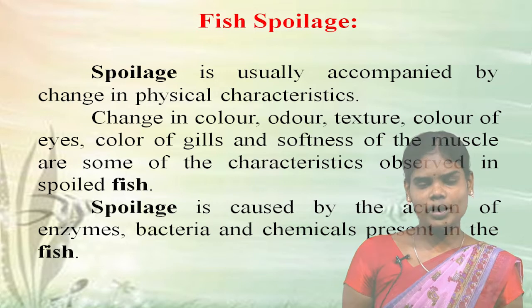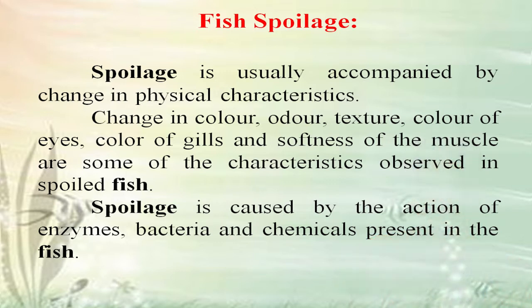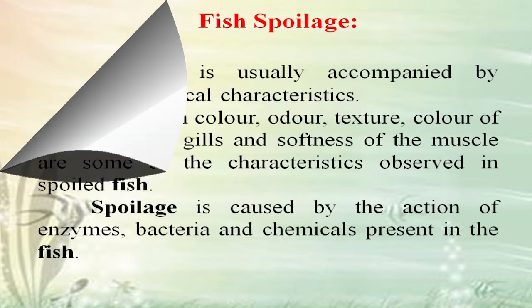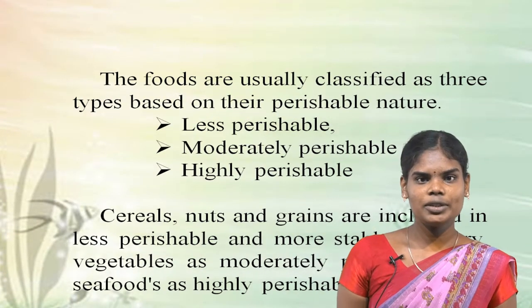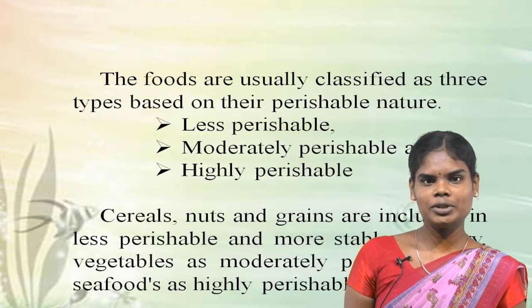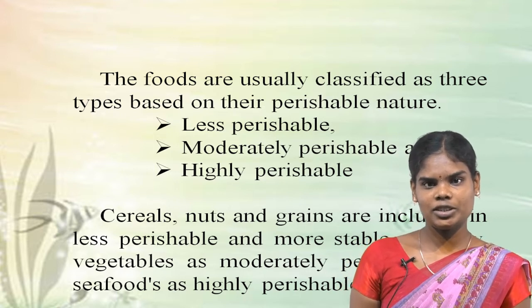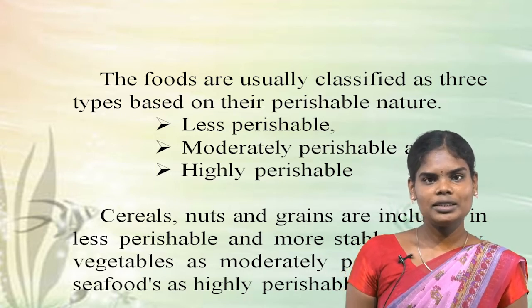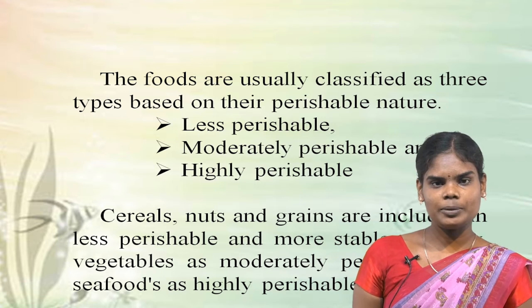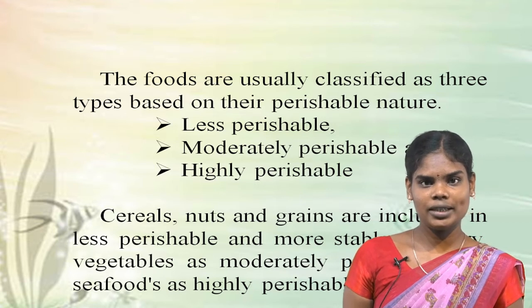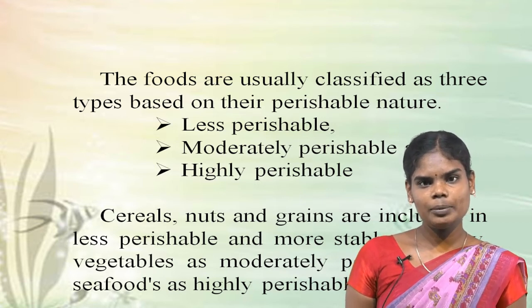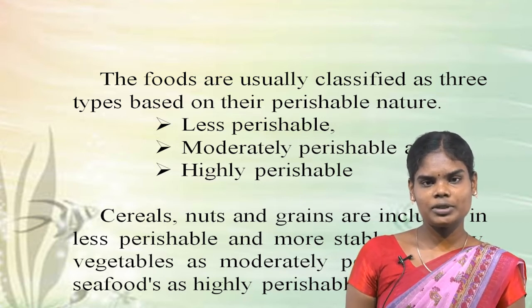Fish spoilage is a complicated process brought about by the action of enzymes, chemicals and bacteria present in the fish. Usually food is classified into three types based on perishable nature: less perishable food items, moderately perishable food items, and highly perishable food items.